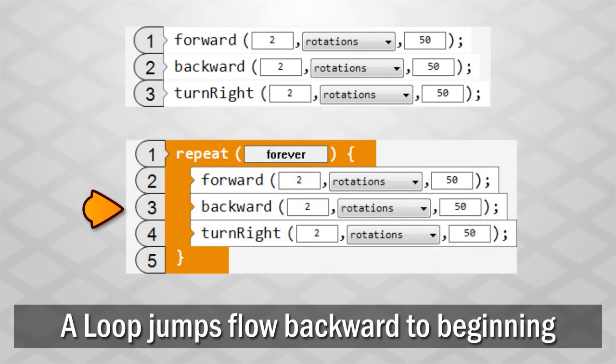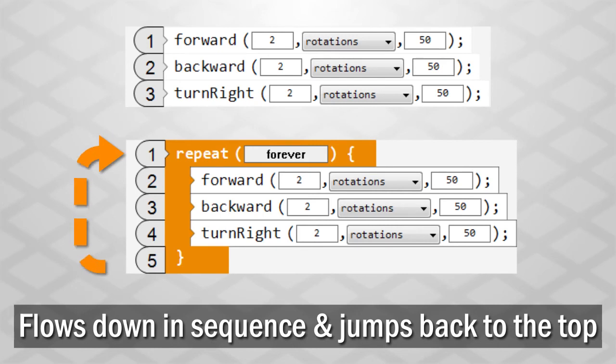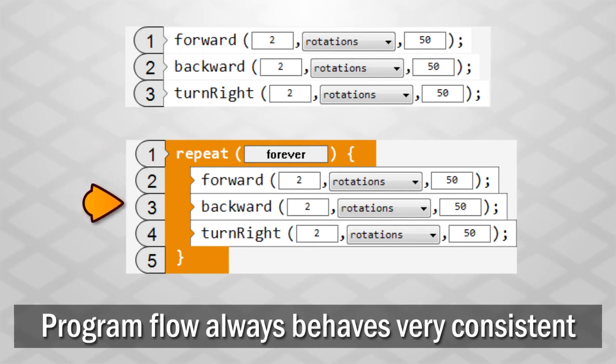Commands in sequence pass the flow down the line, while loops kick the flow backward. From there, it just behaves normally: flow down the line in sequence and maybe get kicked back again. The flow of the program behaves very consistently at all times.